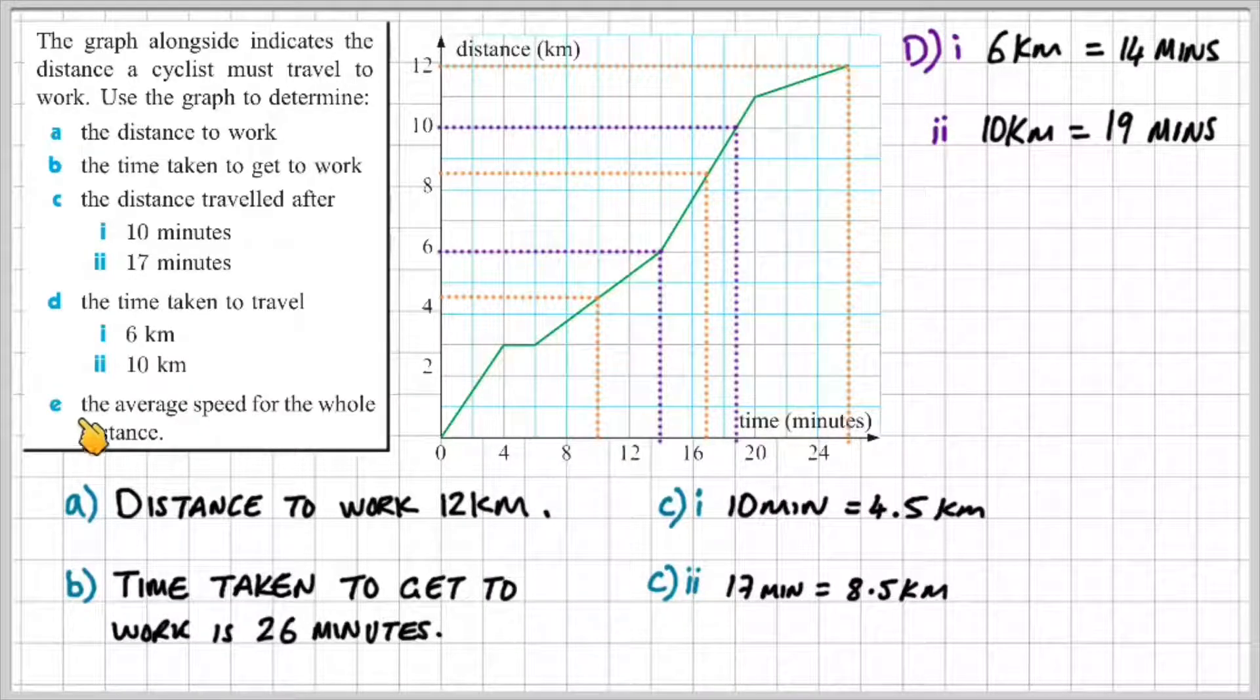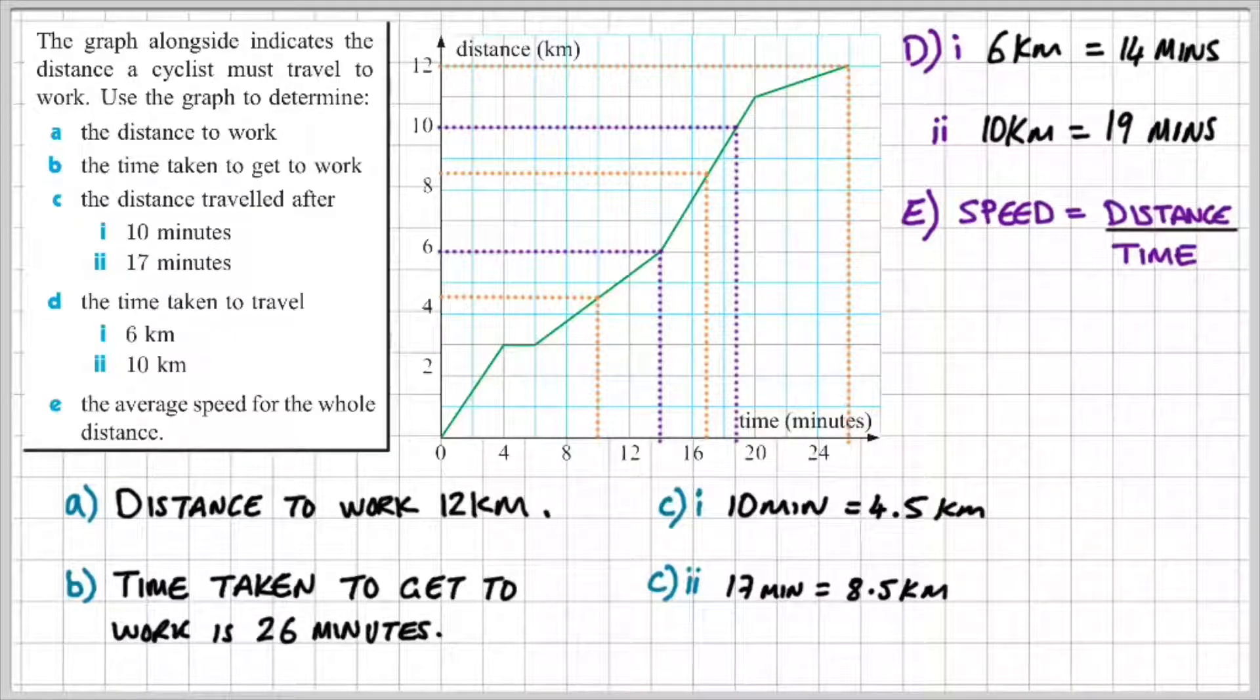Part E is the most difficult part. It says find the average speed of the whole distance. So I'm going to share a formula with you. You use it in physics as well. Speed is equal to distance divided by time.